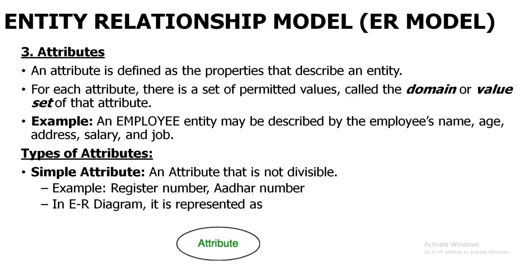For another example, you can take the entity student. For student, the attributes will be student number — that is a register number — name, which department, what courses enrolled, what is the age of the student, who is the class teacher. All of these will be coming under the properties or attributes of an entity. These attributes will be represented in an oval symbol. The notations for all entities, attributes, and relations will be described in the later slides.